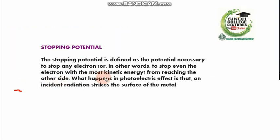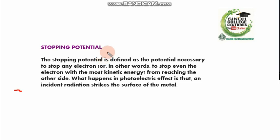This is stopping potential — used in order to stop the electrons. In a circuit diagram, you must apply stopping potential by reversing the terminals of the battery: positive with negative and negative with positive, then we have stopping potential. Stopping potential is used to determine the kinetic energy of the electrons.